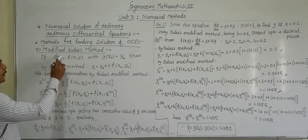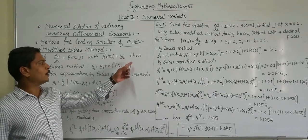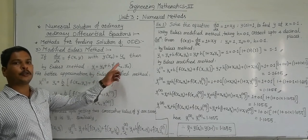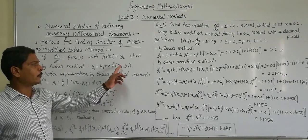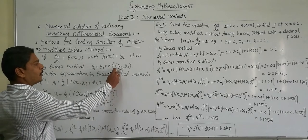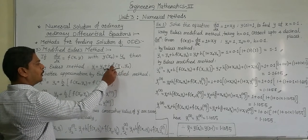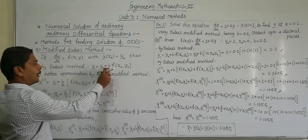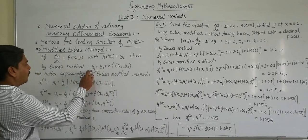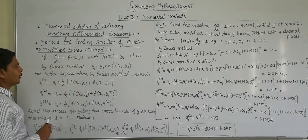If we have dy/dx equal to a function of x and y, with y of x0 equal to y0, then by Euler's method y1 becomes y0 plus h into f of x0 comma y0. That means we replace x by x0 and y by y0 in our function, multiply by h, and add it to y0 to get y1. This is the first iteration by Euler's method.